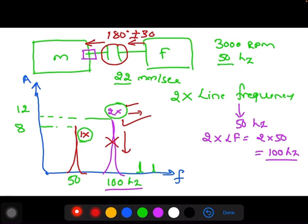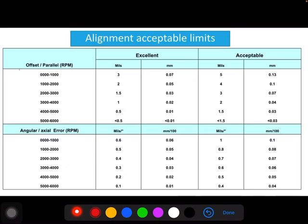Then you need to do proper alignment between the motor and fan. You need to refer this alignment chart. For 3000 rpm, 0.03 is excellent and 0.07 is the acceptable limit for offset. For angular, 0.04 is excellent and 0.01 is the acceptable limit.